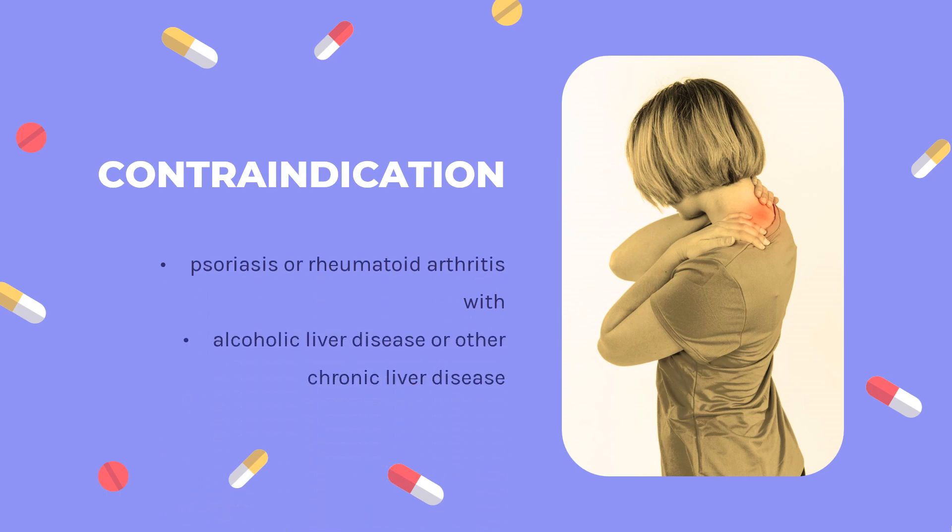Contraindications: Methotrexate is contraindicated in patients with psoriasis or rheumatoid arthritis with alcoholism, alcoholic liver disease, or other chronic liver disease; who have overt or laboratory evidence of immunodeficiency syndromes; or who have pre-existing blood dyscrasias such as bone marrow hypoplasia, leukopenia, or thrombocytopenia.